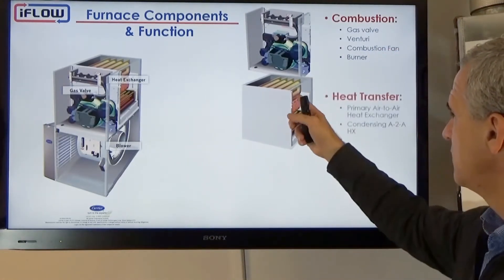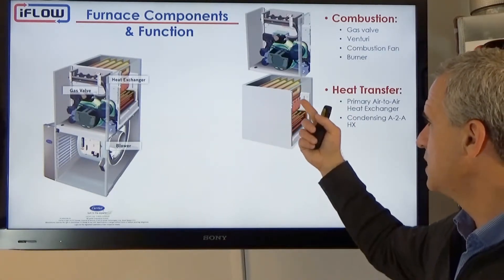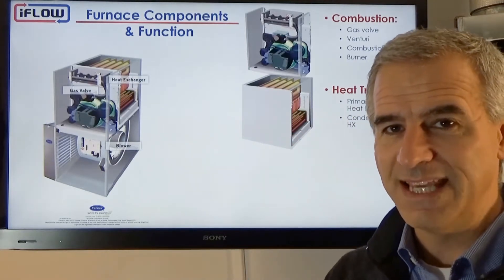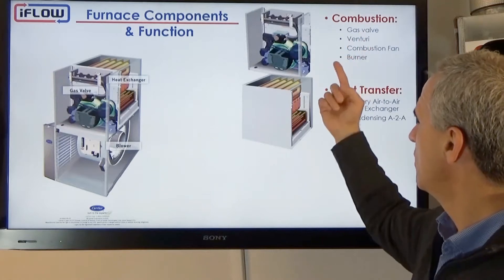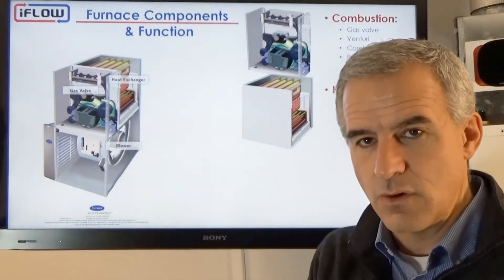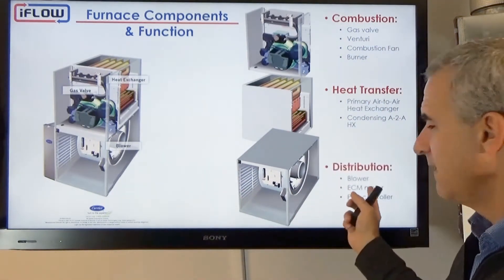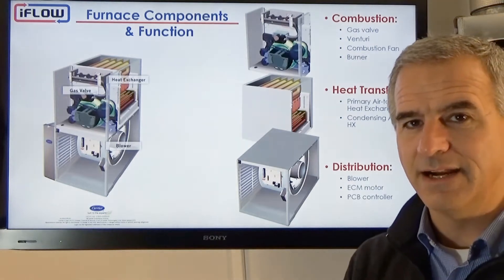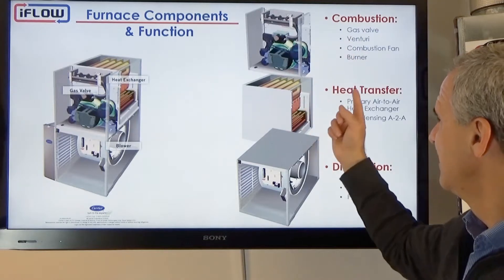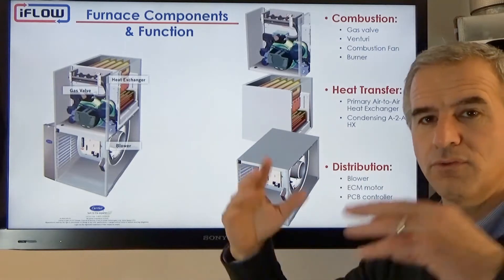We have the heat exchangers, and in a condensing unit, we have the secondary heat exchanger and then the primary. These heat exchangers transfer the heat made on the combustion side from the burner and convert that to the air — as the air passes across, it transfers. Then the blower distributes that heated air through the home. So we have conversion of gas to heat, transfer of that heat to the air, and distribution of that air through the home.